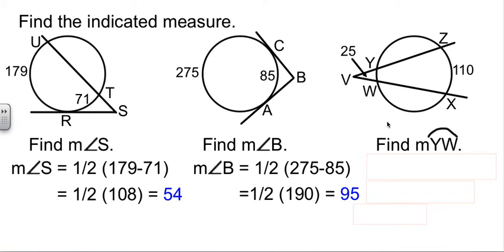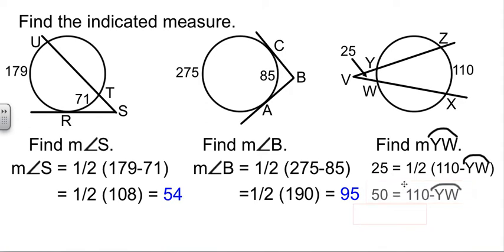One last one. We've got a couple of secant lines intersecting outside the circle. So this angle will be half of the difference between those two. Now, clearly common sense would tell you the one on the circle farther away from the angle is going to be bigger. Okay. So we're looking at 25, the angle, equals half the difference between the two things. 110 minus this arc.